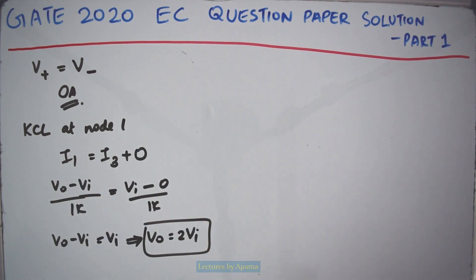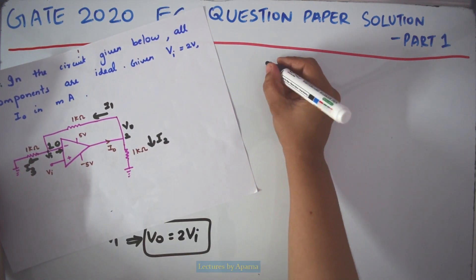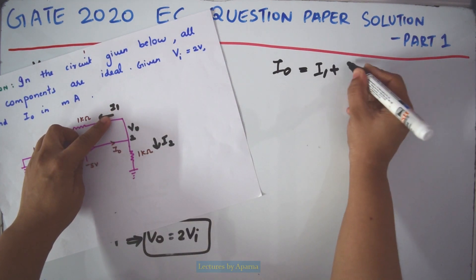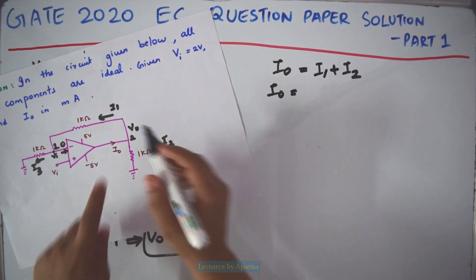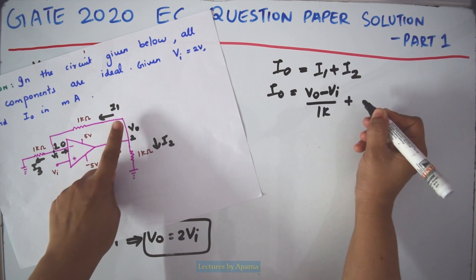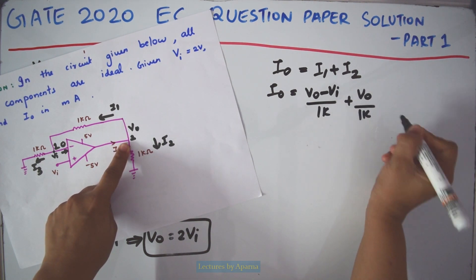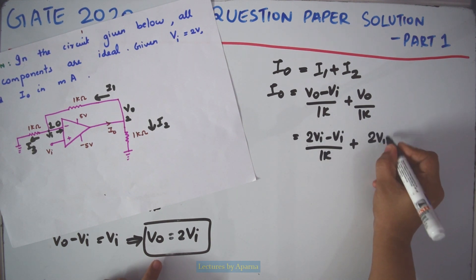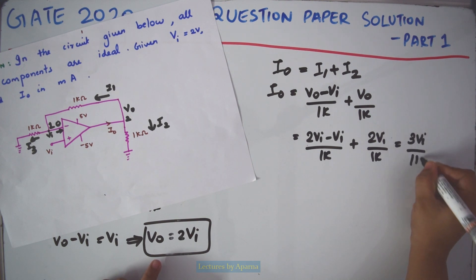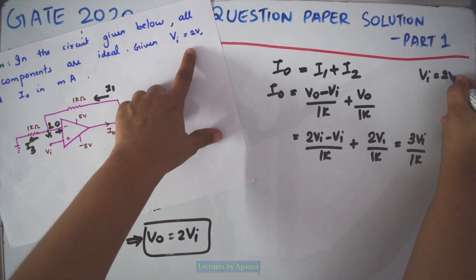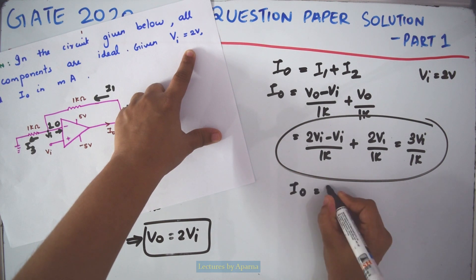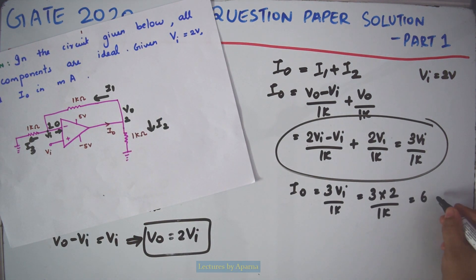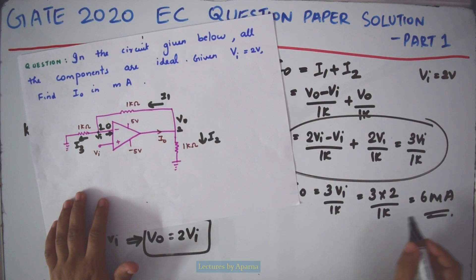Now applying KCL at node 2: I0 equals I1 plus I2, which is (V0 minus VI) divided by 1K plus V0 divided by 1K. Substituting V0 equals 2VI, this becomes (2VI minus VI) divided by 1K plus 2VI divided by 1K, which equals 3VI divided by 1K. With VI equal to 2 volts, I0 equals 3 times 2 divided by 1K, giving 6 milliamperes. So the answer is I0 equal to 6 milliamperes.